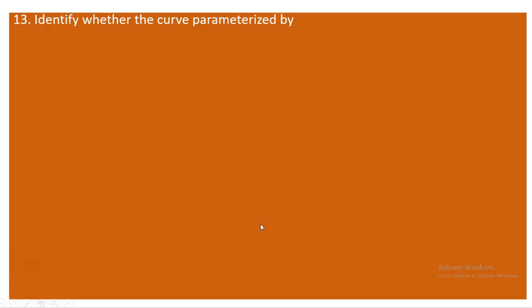Okay students, let's continue. We're going to look at different kinds of curves and classify them as smooth or not smooth. Suppose you have a curve parameterized by the vector r(t) = sin(t)i + cos(t)j + 8k. The question is: is this curve smooth or not?